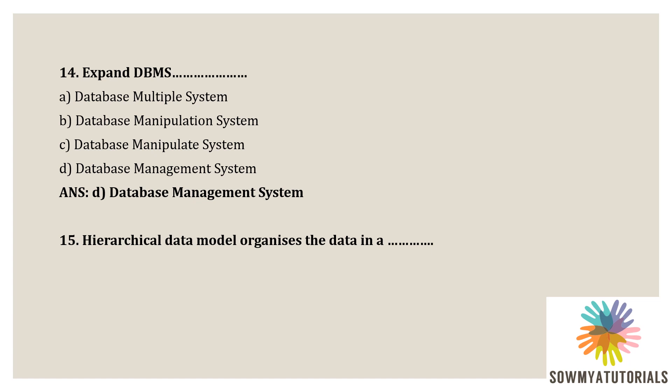Next question: hierarchical data model organizes the data in a dash. Options are A) graph, B) tree, C) table, D) none of these. The correct answer is B — tree. The hierarchical data model organizes data in the form of a tree-like structure.